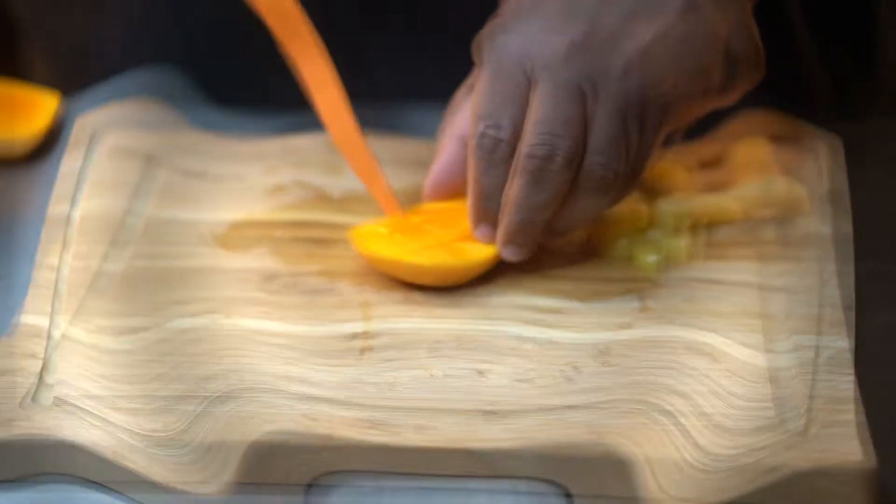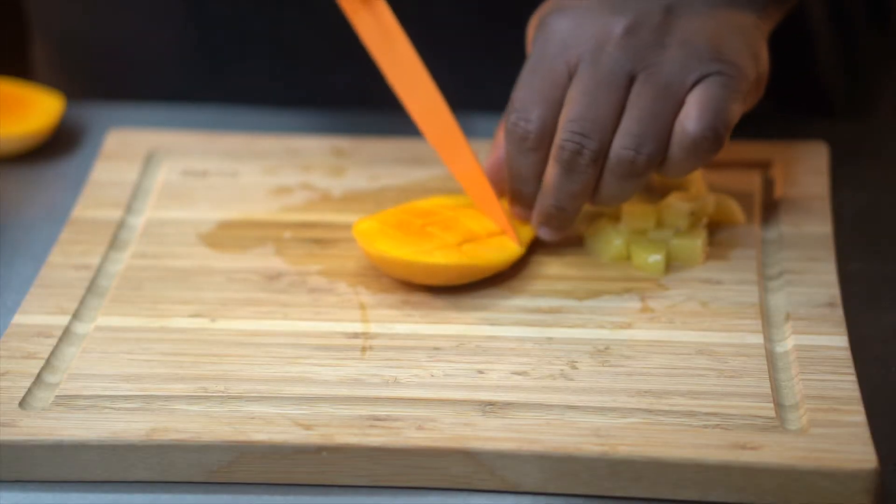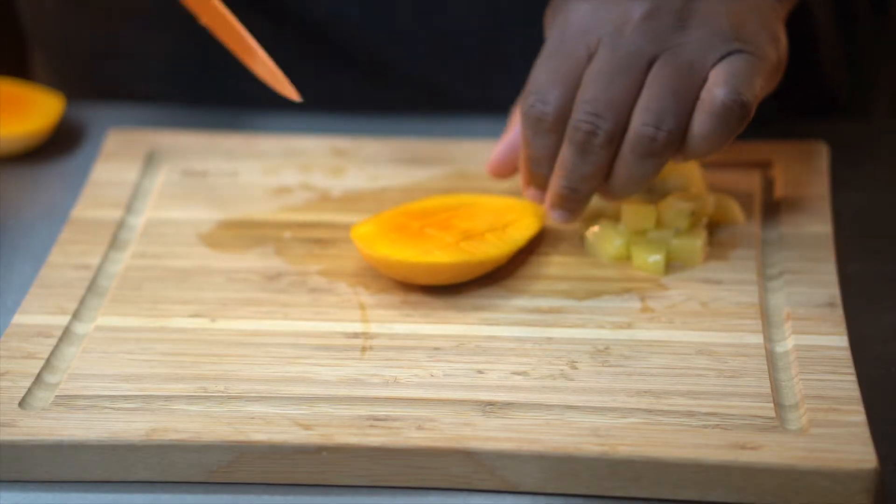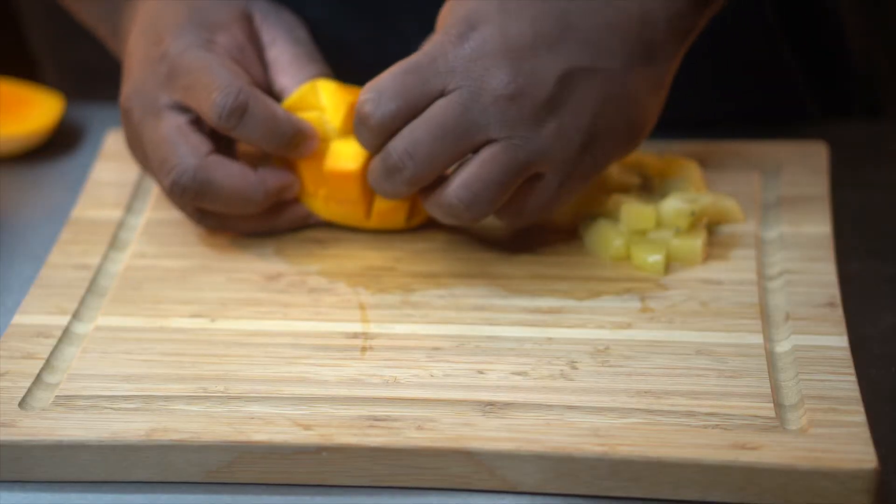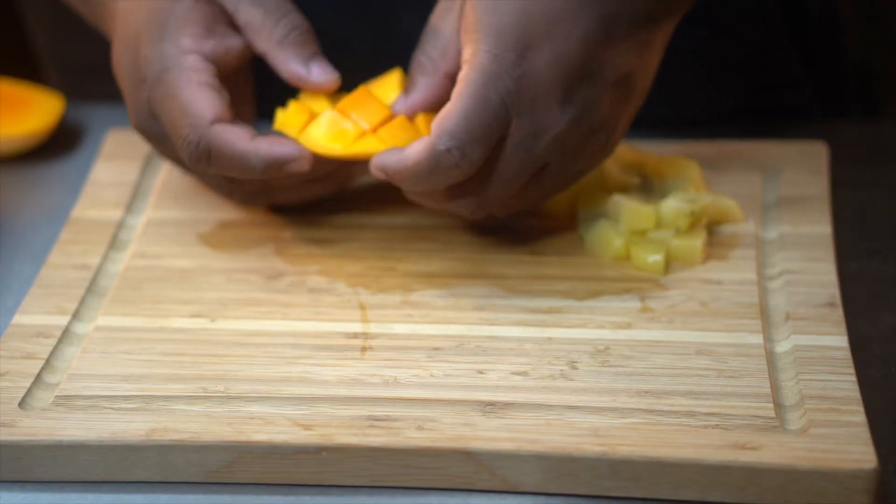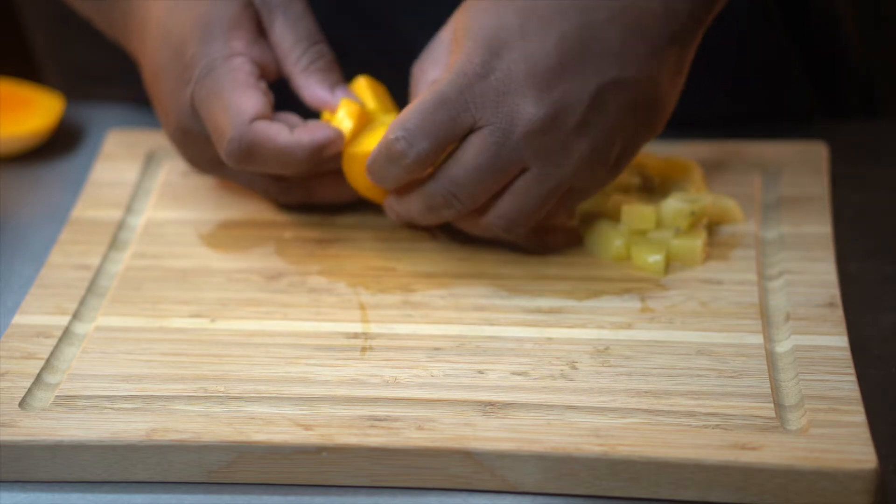And with that cut, it just makes even squares. And I'm going to take and fold it over, and then I'm going to just pick those squares off of the mango. That's the easiest way to cut the mango, or you can peel the mango and actually cut it that way, but I find this way to be a lot easier.